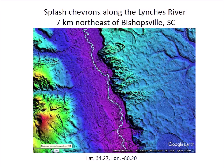In this image we see that the width of Lynch's River is very small compared to its 2.5-kilometer floodplain. The splash chevrons are on the east bank of the river, as was the case for all the chevrons examined. There are no chevrons on the west bank. The direction of the chevron dunes is well defined and they can be used to determine the direction of the wind when the dunes formed.